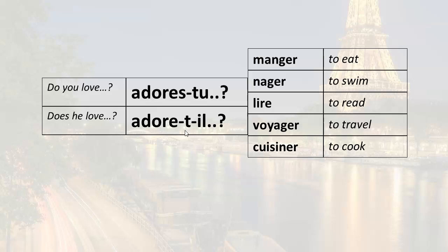If you were to just say without the t, adore il, it runs together, adore il. So we insert the t just as a device to separate the verb form and the subject pronoun. Adore-t-il, adore-t-il. So adores-tu, do you love.